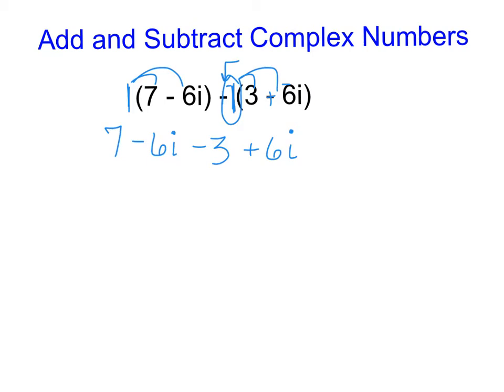Then from here, I always recommend using keep, change, change if you struggle with your signs. But from here, we focus on combining the real parts together and the imaginary parts together. You cannot combine imaginary with real. With the i's, they work like like terms. You can't combine them together. So what I notice here is that my real parts of 7 and negative 3, if I combine those together, become 4.